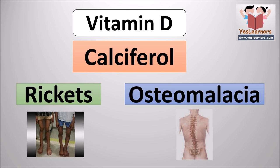The scientific name of vitamin D is calciferol. The deficiency of vitamin D causes rickets in children and osteomalacia in adults. The affected organ due to deficiency of vitamin D is bones.